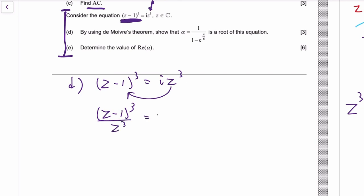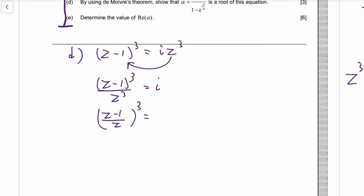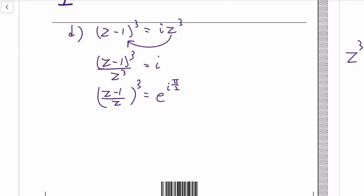Okay, I think the trick is I should divide z cubed, so it's this cubed over z cubed. So this is actually z minus one over z, cubed. Then we can use De Moivre's theorem. So i—you change it to a polar form—is e to the i pi over 2. So we take the cube root. One of the answers would be e to the i pi over 6, as we've done.